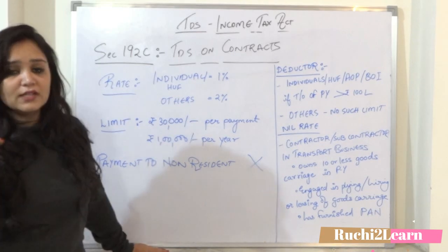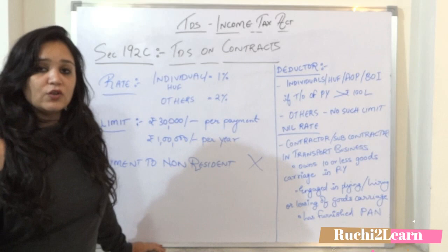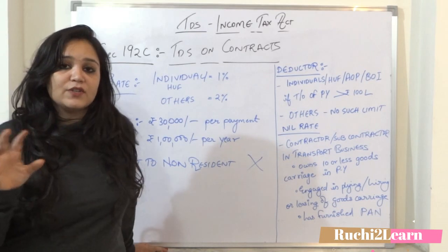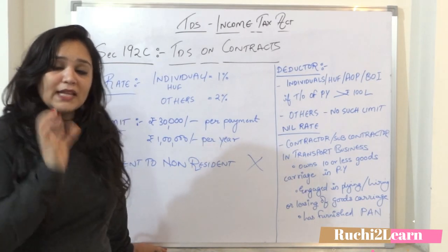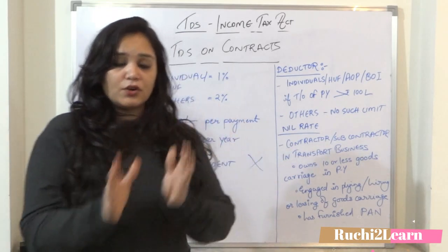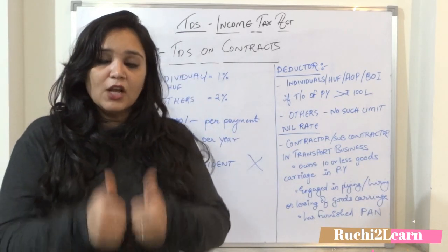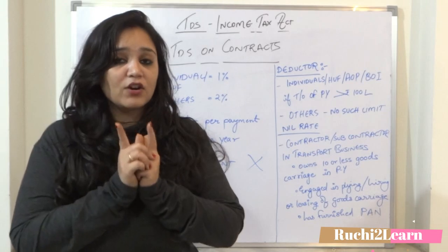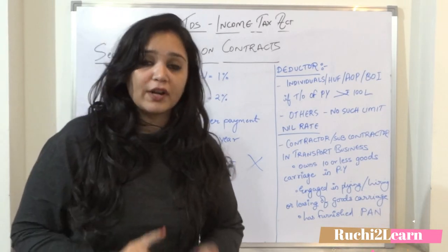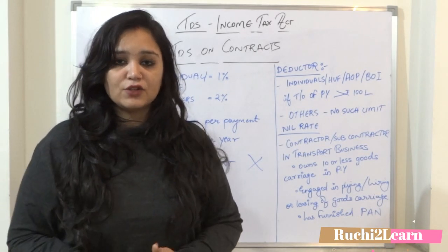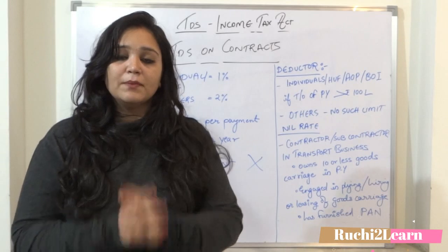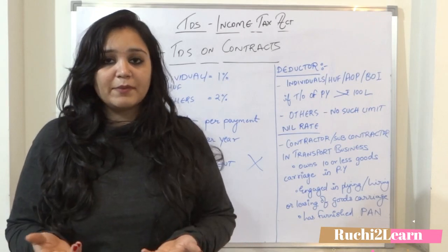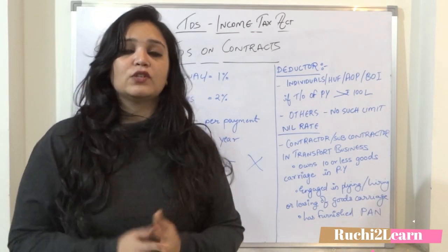There are many case laws on this section and 194J. It is very confusing whether a payment falls under 194J or 194C. There are many factors taken into consideration. The main thing is that if there is a contractor and contractee relationship, then it is a contract, and it will be covered under 194C. From an exam point of view, if the payment is under a contract, you should assume that 194C will apply.